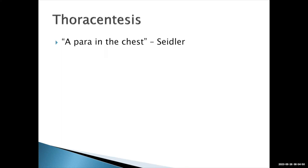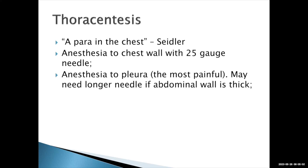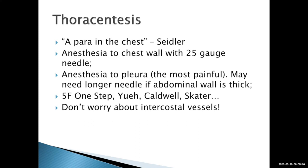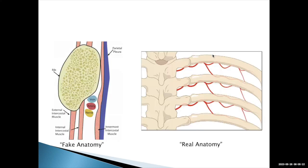For a thoracentesis, I tell residents it's basically a paracentesis in the chest — similar technique. We use a 25-gauge needle to anesthetize the chest wall. The pleura is the most painful part, so give a nice aliquot of lidocaine to the pleural surface. We use a 5-French catheter. Don't worry too much about the intercostal vessels, and here's why: in medical school they teach you that intercostal vessels are below the rib, so you should always go above the rib. But that's not the reality.